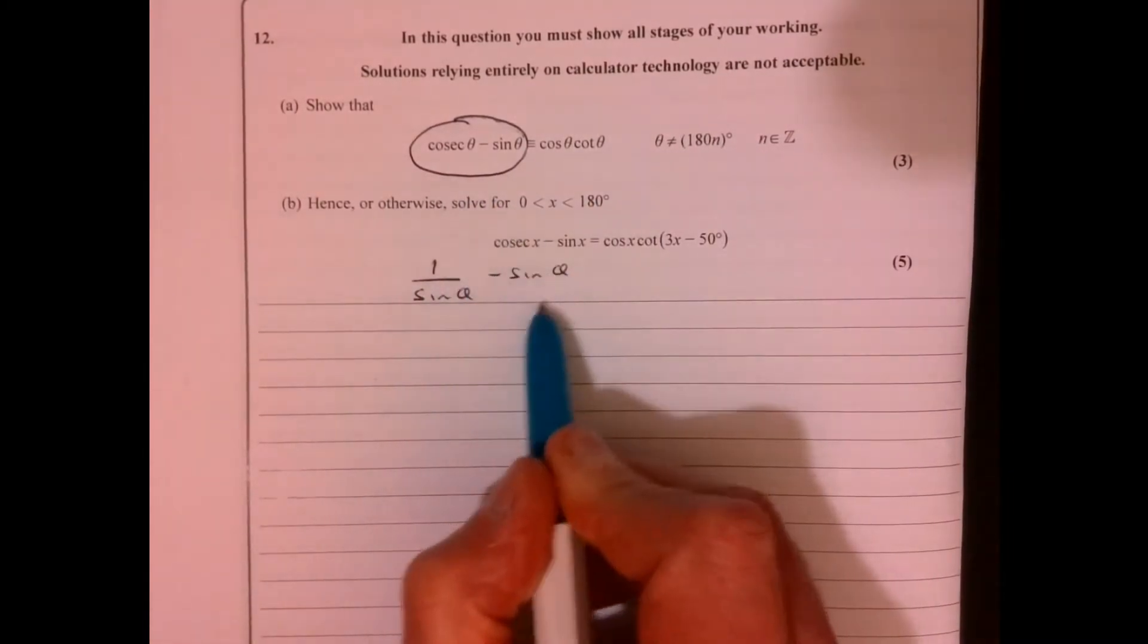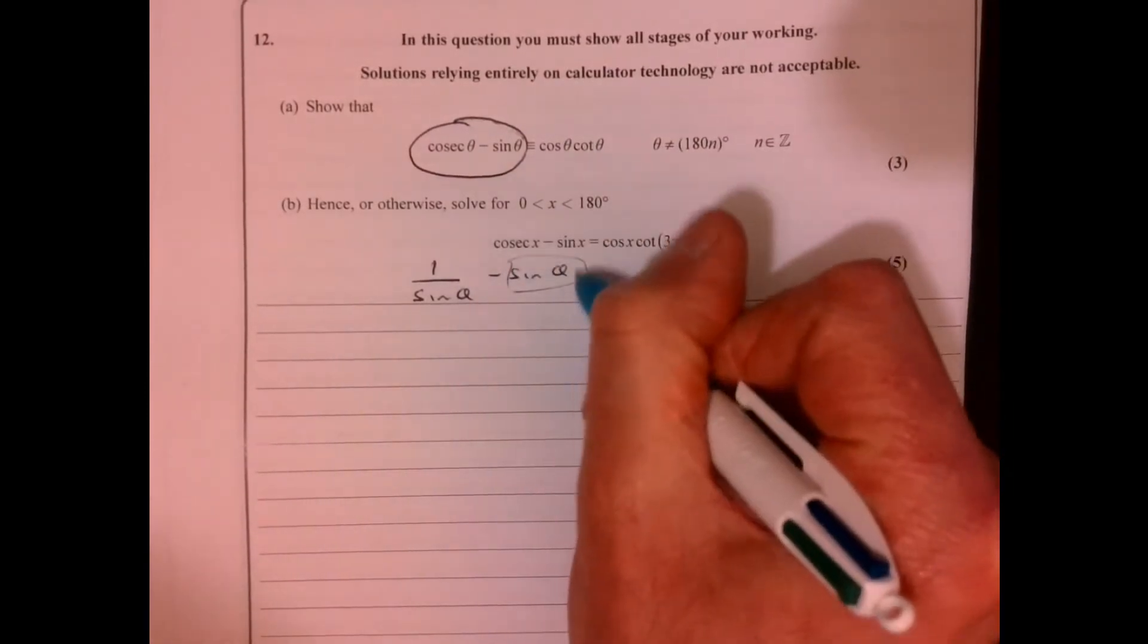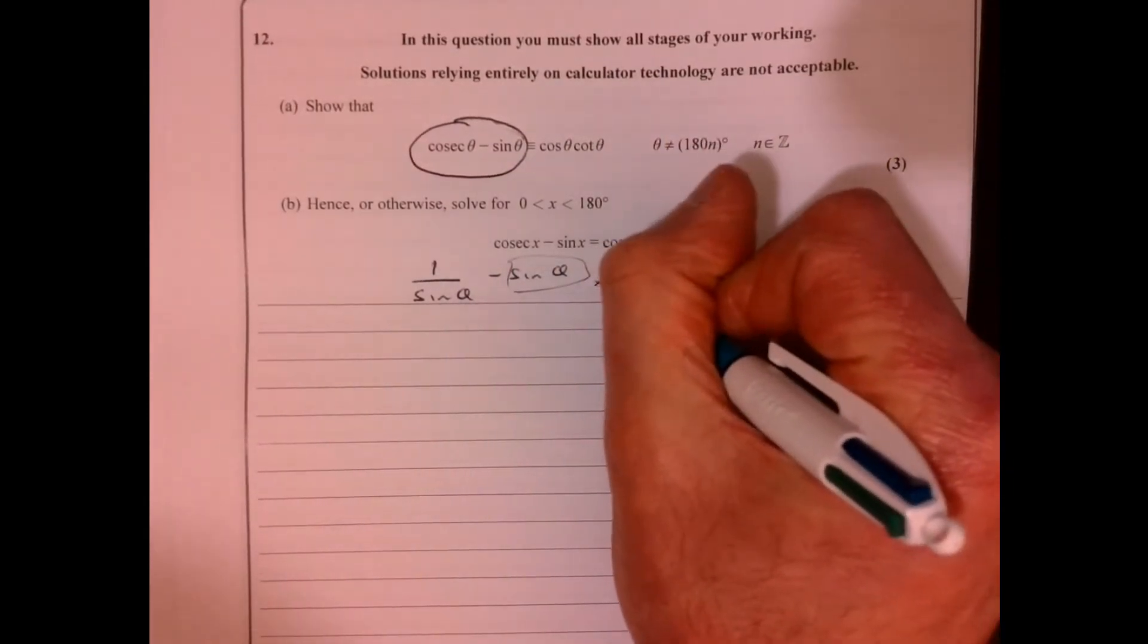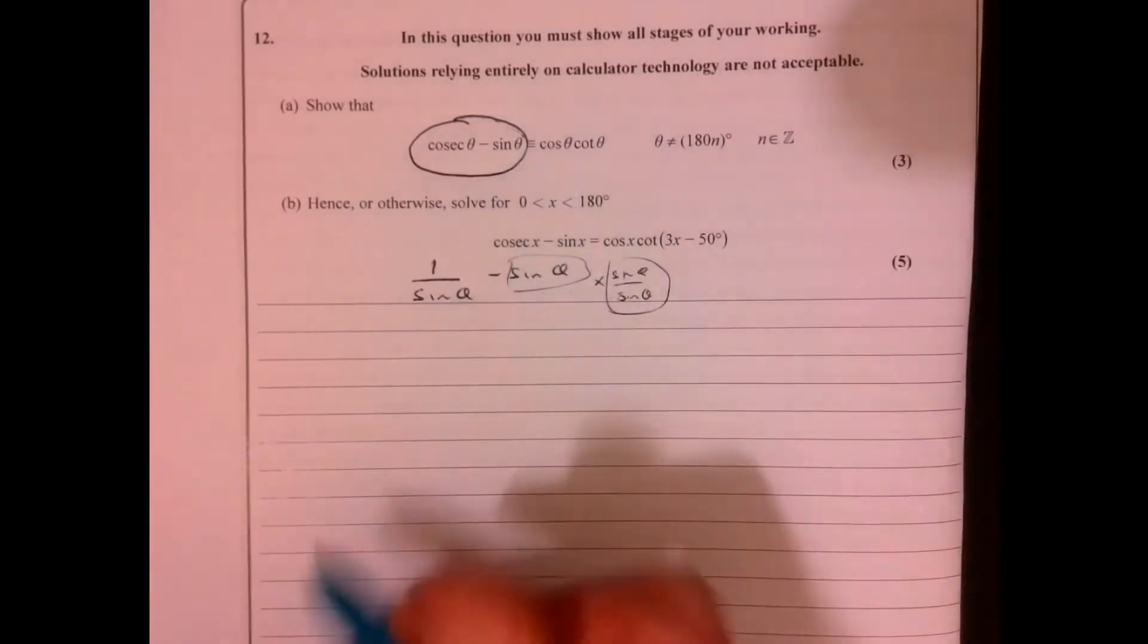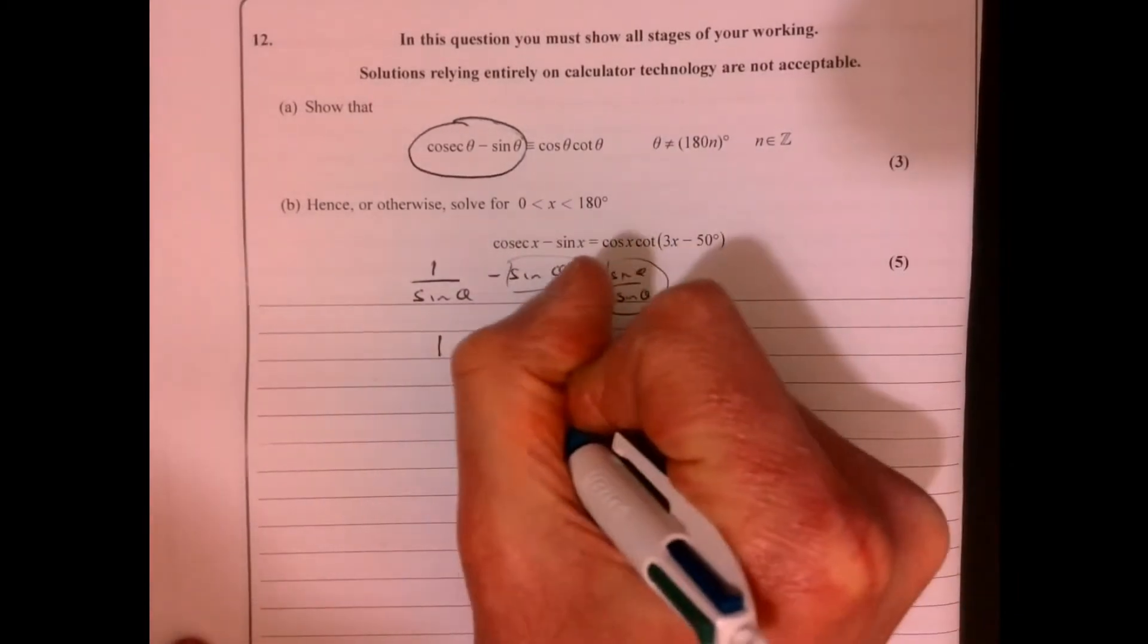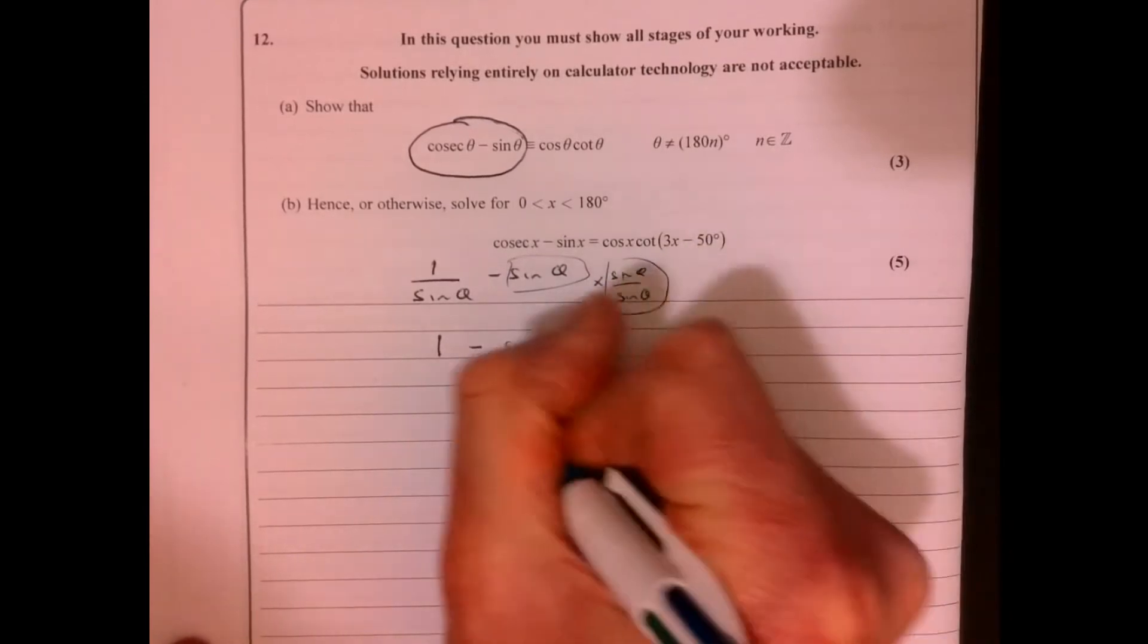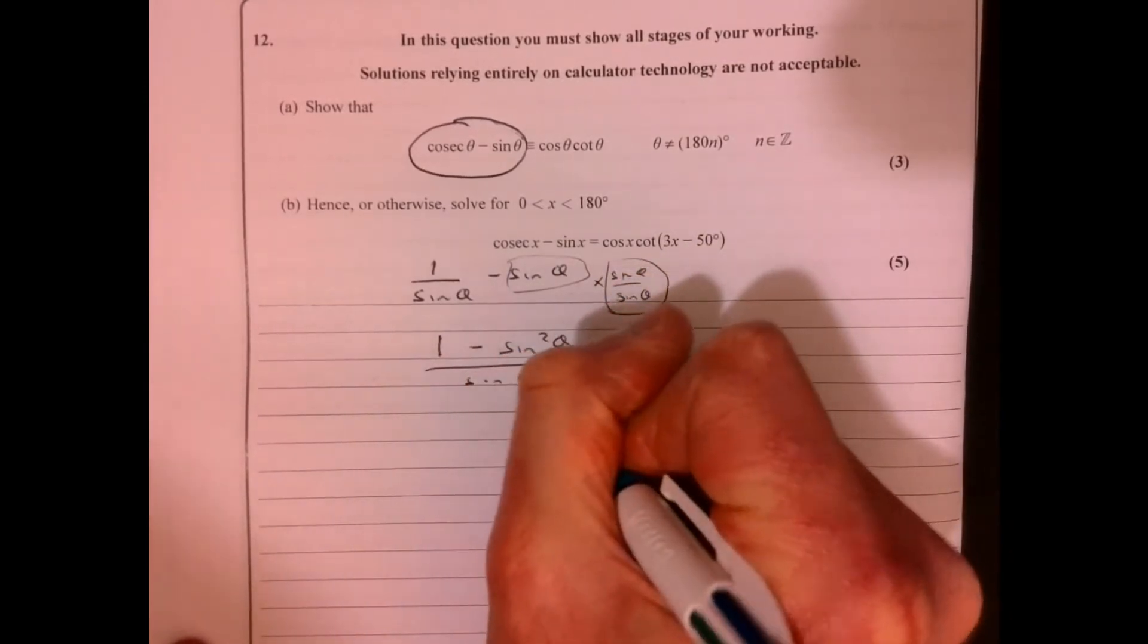Now let's combine it. So let's multiply this one, top and bottom, by sin theta. So it's like multiplying it by one. So what do we get? We get 1 minus sin squared theta over sin theta.